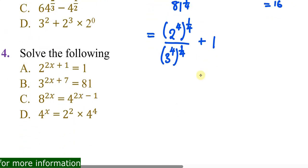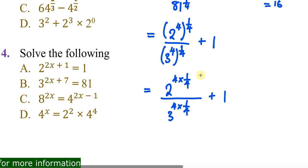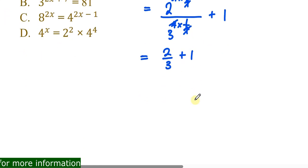Multiply the powers: 4 times 1/4 for both. The 4s cancel, leaving 2 to the power 1 over 3 to the power 1, plus 1. That simplifies to 2/3 + 1.